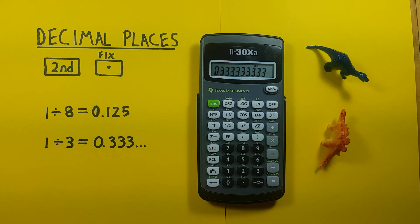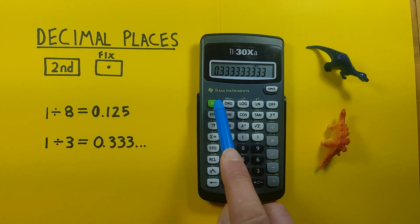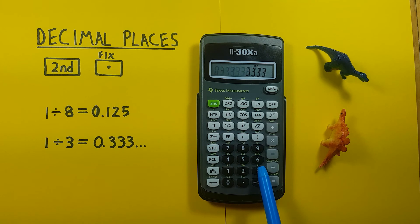And again, if we wanted to just round this to say 3 decimal places, we'd go second, decimal, 3. It's rounded. Turn off rounding by 2nd, decimal, decimal, and we're back out of fixed mode there.